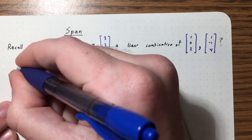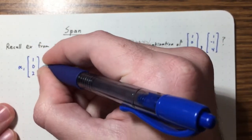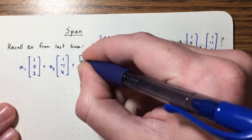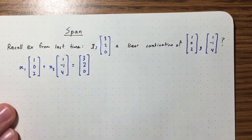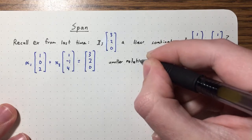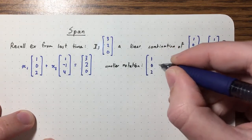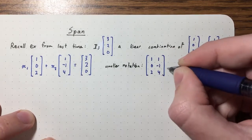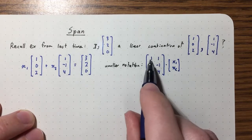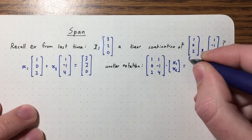What does that mean? Are there scalars x1 and x2 such that x1 times the first vector plus x2 times the second one equals this vector? We also had another notation for that — not a new concept, just a new notation. That notation is a matrix times a vector, where this means taking the linear combination of the two column vectors with those two scalars.